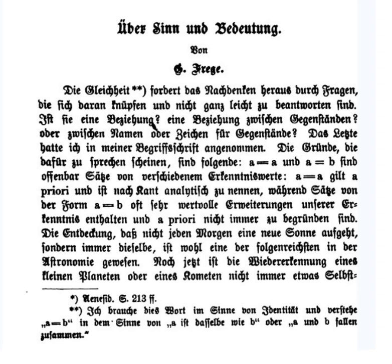Frege introduced the notion of "sense" to accommodate difficulties in his early theory of meaning. First, if the entire significance of a sentence consists of its truth value, it follows that the sentence will have the same significance if we replace a word with one having an identical reference, as this will not change its truth value. If the evening star has the same reference as the morning star, then "the evening star is a body illuminated by the sun" has the same truth value as "the morning star is a body illuminated by the sun". But it is possible for someone to think that the first sentence is true while also thinking that the second is false. Therefore, the thought corresponding to each sentence cannot be its reference, but something else, which Frege called its sense.